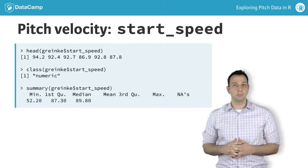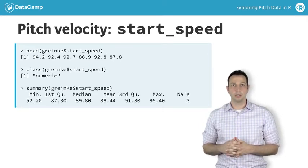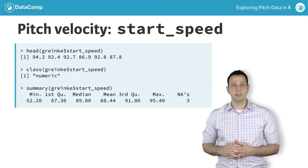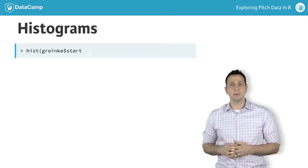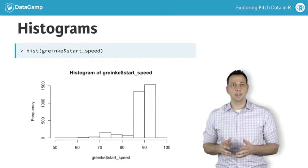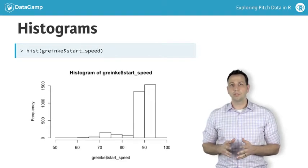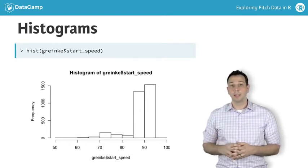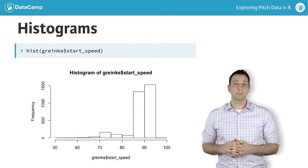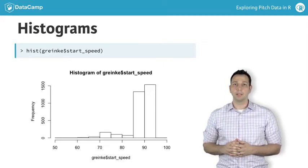You'll begin by using a histogram to visually explore the velocity of Greinke's pitches. In later exercises, you'll describe the data numerically. A histogram is a basic visualization tool for exploring the characteristics of your data. Using all of the start_speed data, it's easy to plot a histogram in R with the code here and get a very basic looking plot. You'll improve on the look of this plot in the exercises.